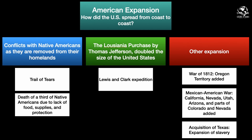Thomas Jefferson literally doubled the size of the United States by purchasing the Louisiana Territory. He then enlisted the help of Lewis and Clark, and they went on an expedition to discover what he had actually purchased — millions of acres of land, ridiculously cheap, purchased from France, from Napoleon. Lewis and Clark explored not only this land but kept going further to the west coast to find a water passage from east to west. They began in St. Louis, Missouri, with a large party, looking for animals, plants, and contact with Native Americans.